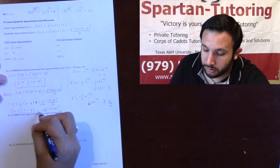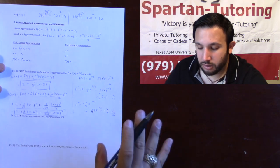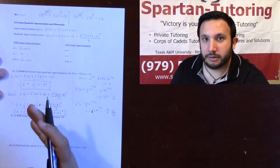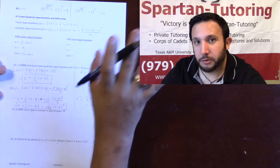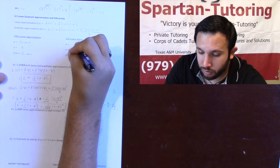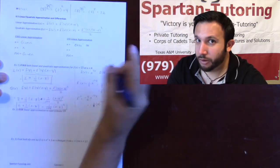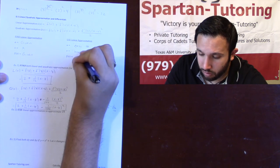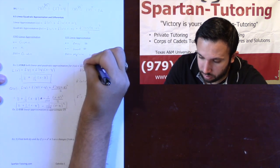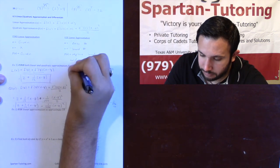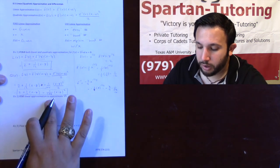Honestly, the hardest part of linear and quadratic approximation is that higher derivatives produce uglier numbers, but the process is straightforward. Now let's talk about using linear approximation. If you need to start from scratch: a is a quote-unquote easy number, x is the quote-unquote hard number, and f(x) is what you get when you replace that hard number with x. For example, use linear approximation to approximate the cube root of 9.